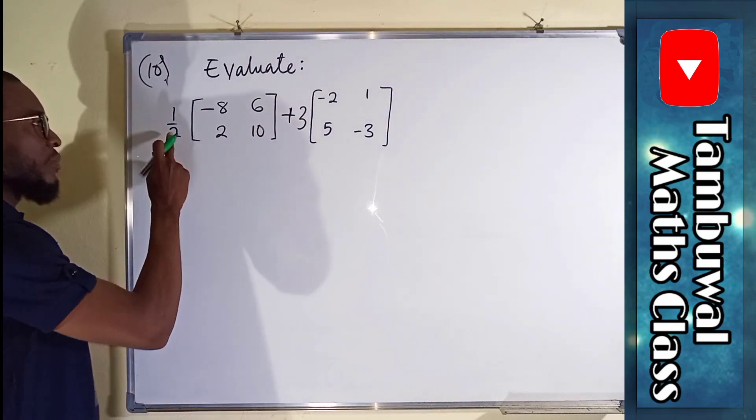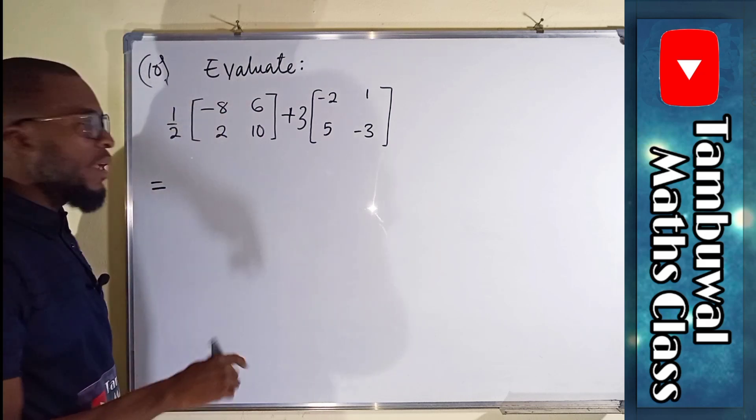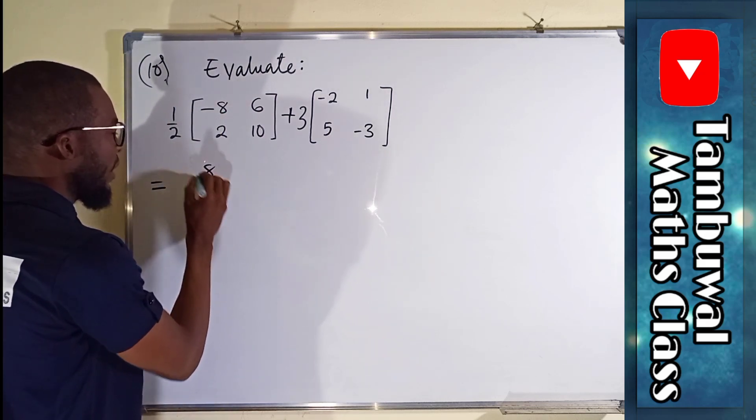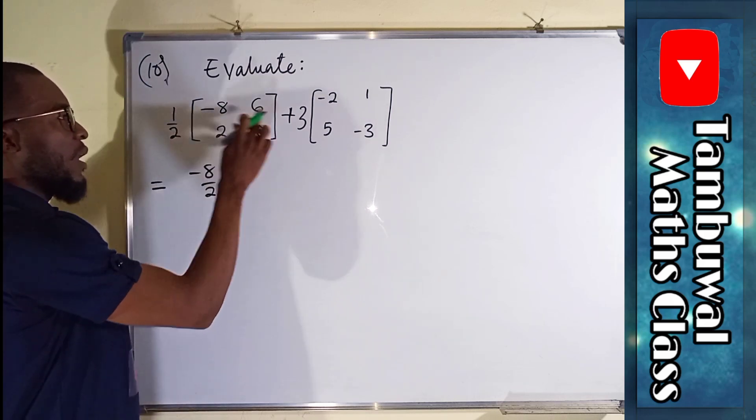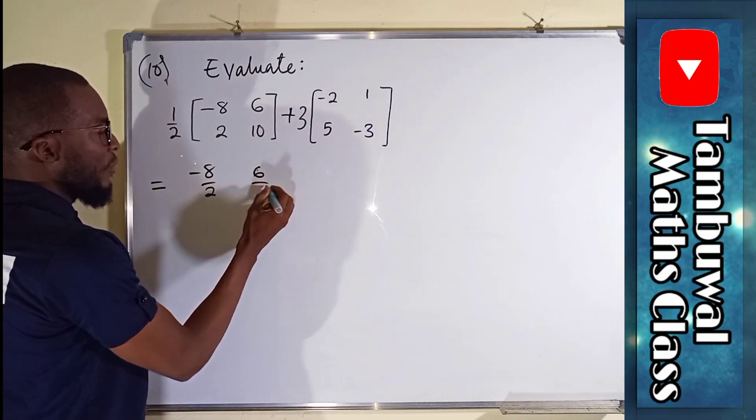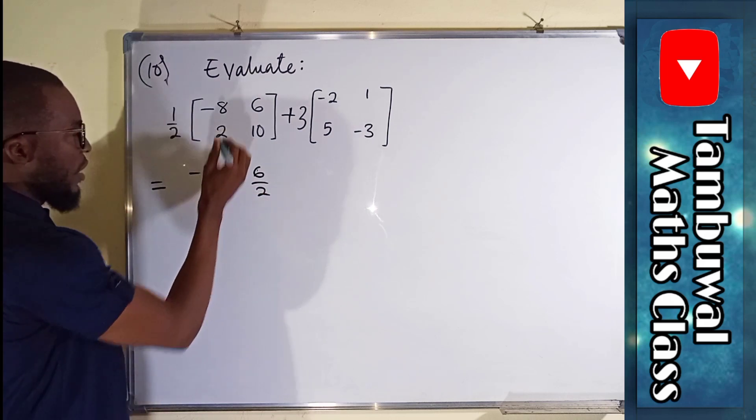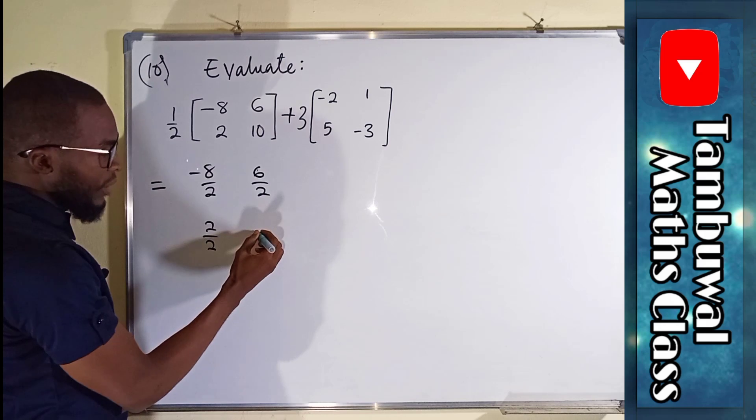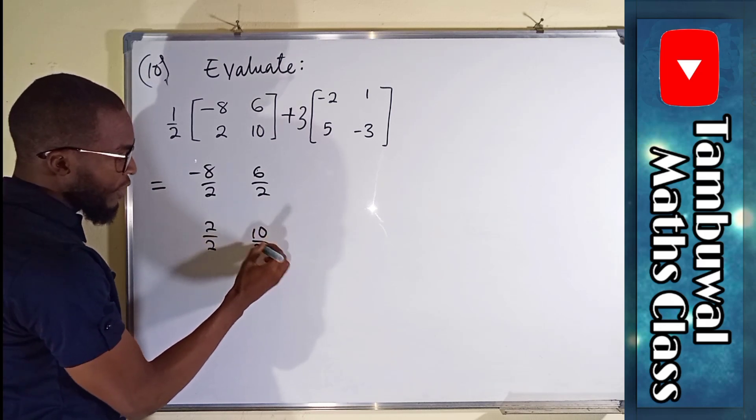So this becomes half multiplied by 8. It's going to be 8 over 2 negative and this one is going to be 6 over 2 and this one is 2 over 2 and this one is 10 over 2.